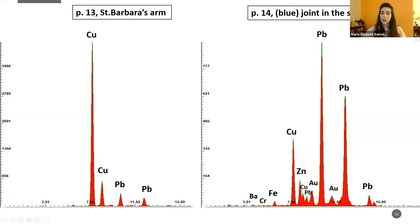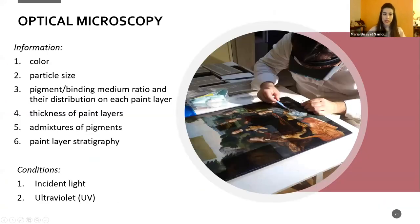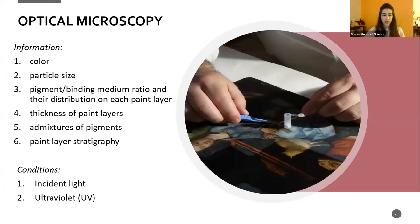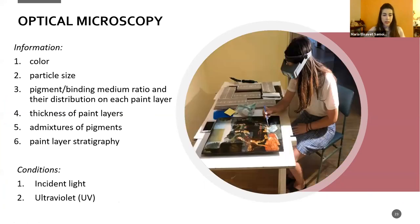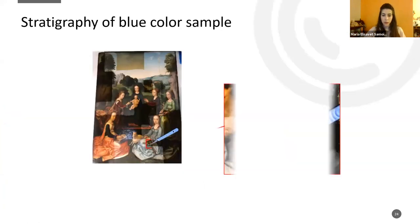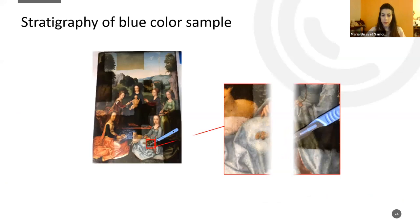We then took two samples for cross-sections to analyze with optical microscopy, which gave us much information about the materials, colors, and particle sizes. Here you can see pictures of the procedure, examined under extended light and under ultraviolet. The first sample was taken from the blue color area.